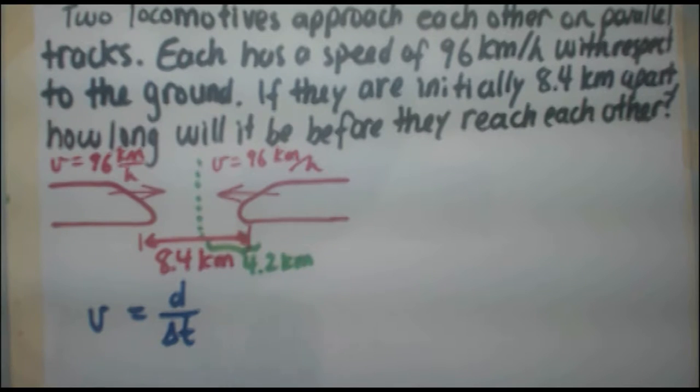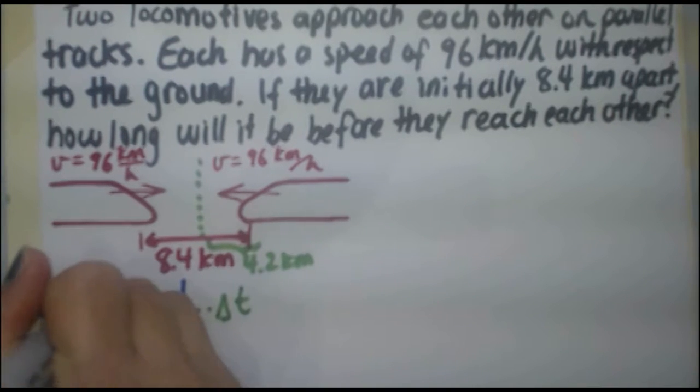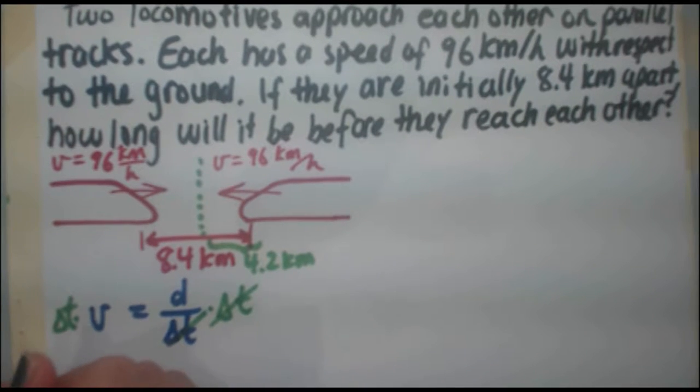Because you're dividing by time right now, to get rid of it, you have to multiply both sides by time. That gets rid of the time here. Then your next step, you're left with V times delta T equals D.